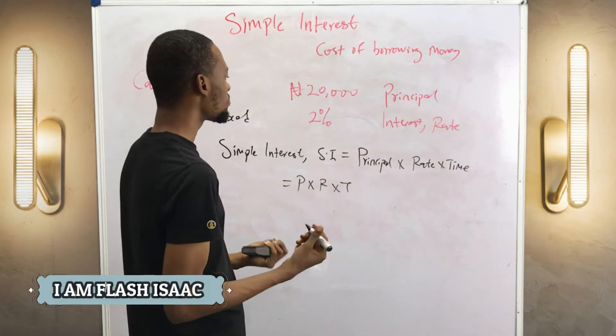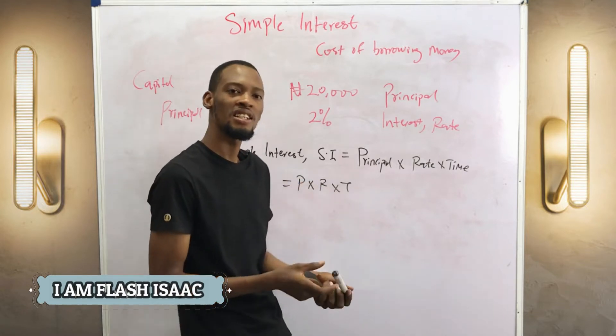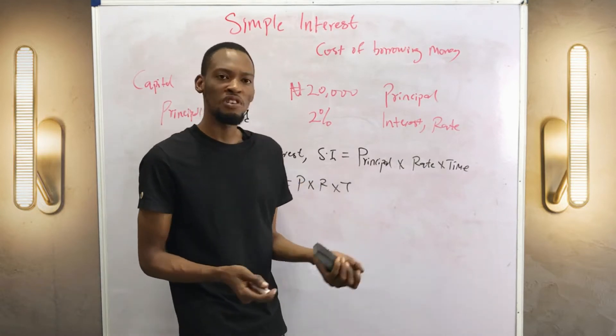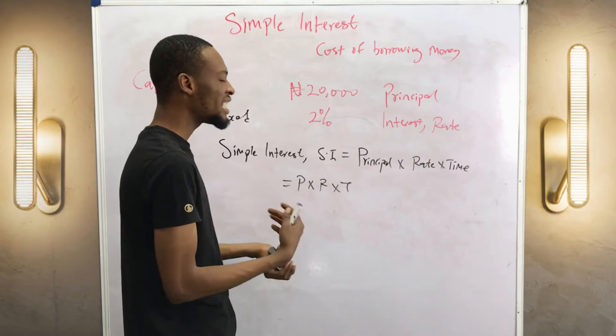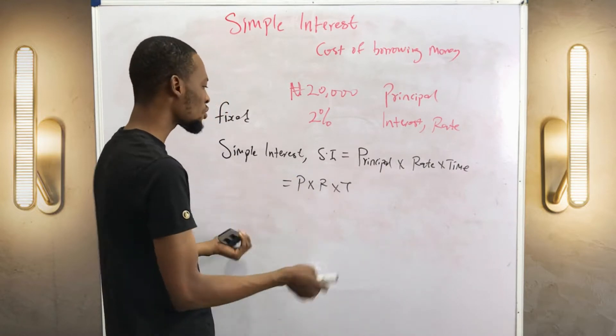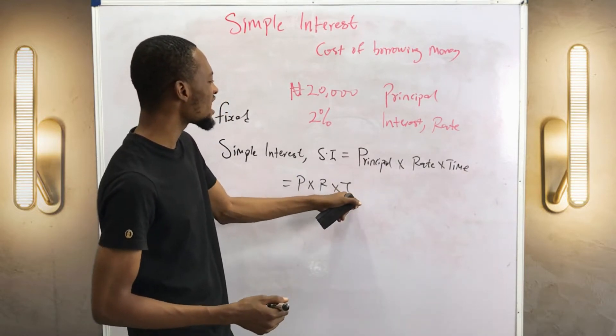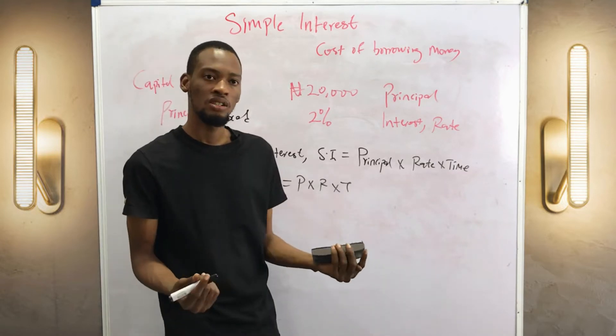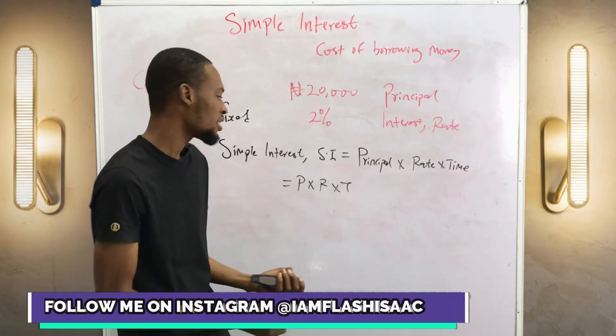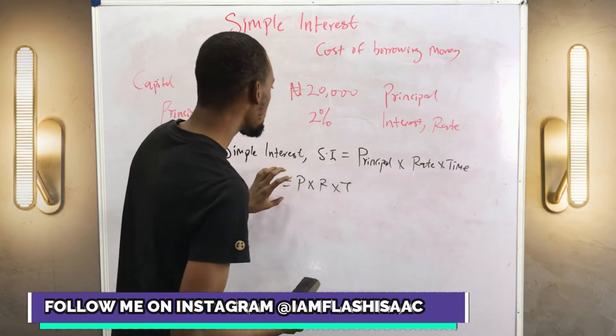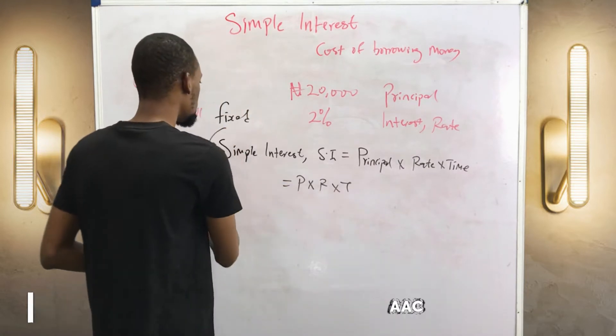Time is the period the money is staying. It can be six months, 12 months, one year, two years, three years, and so on. When they say time per annum, it means per year, per 12 months. So this is your formula for calculating simple interest.